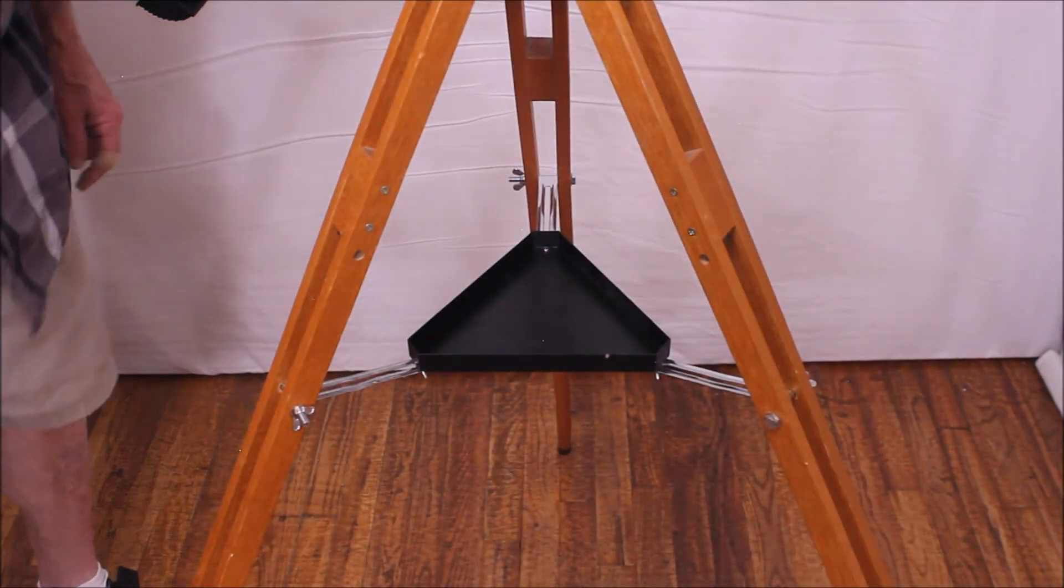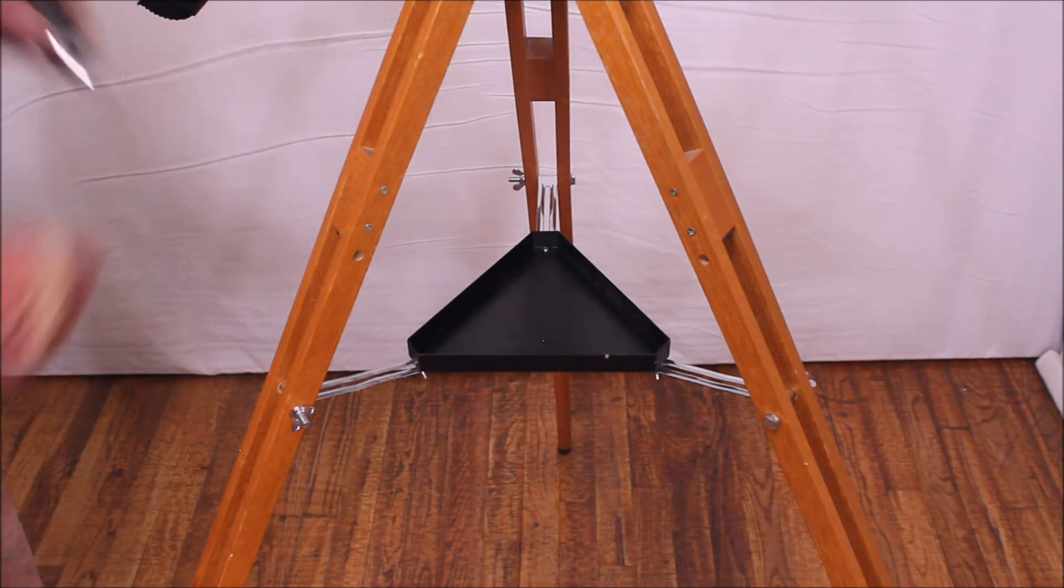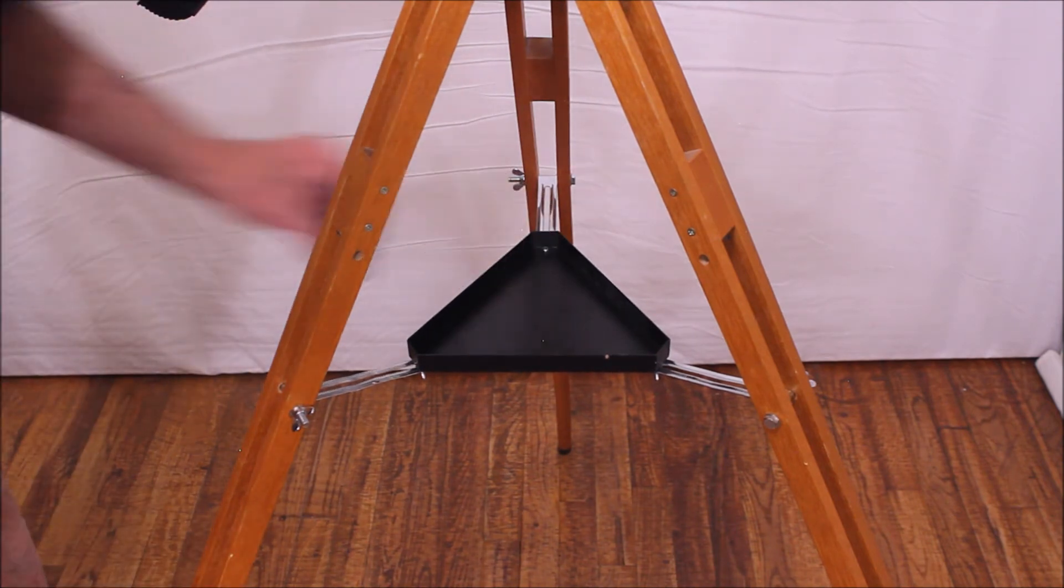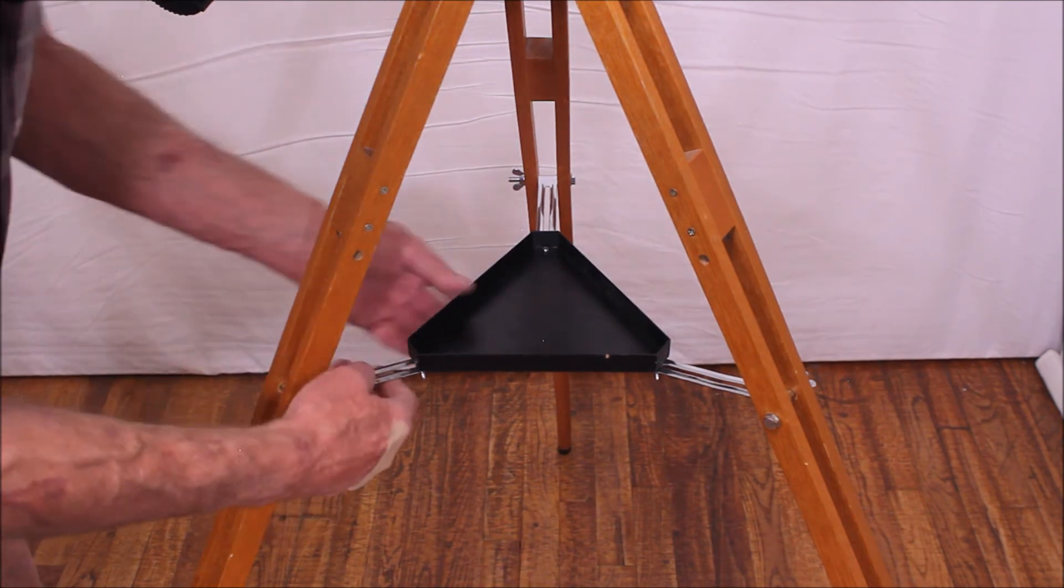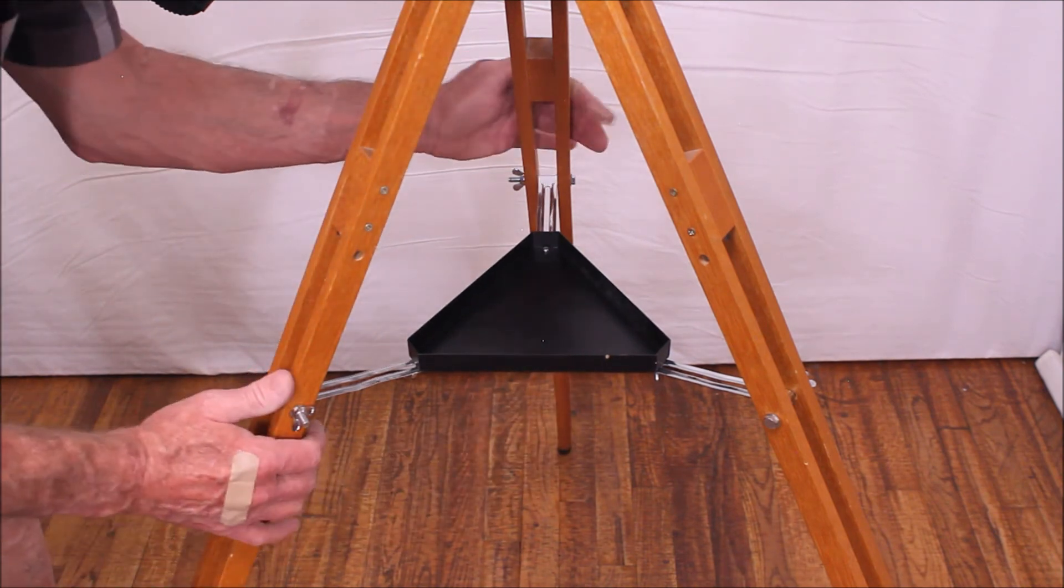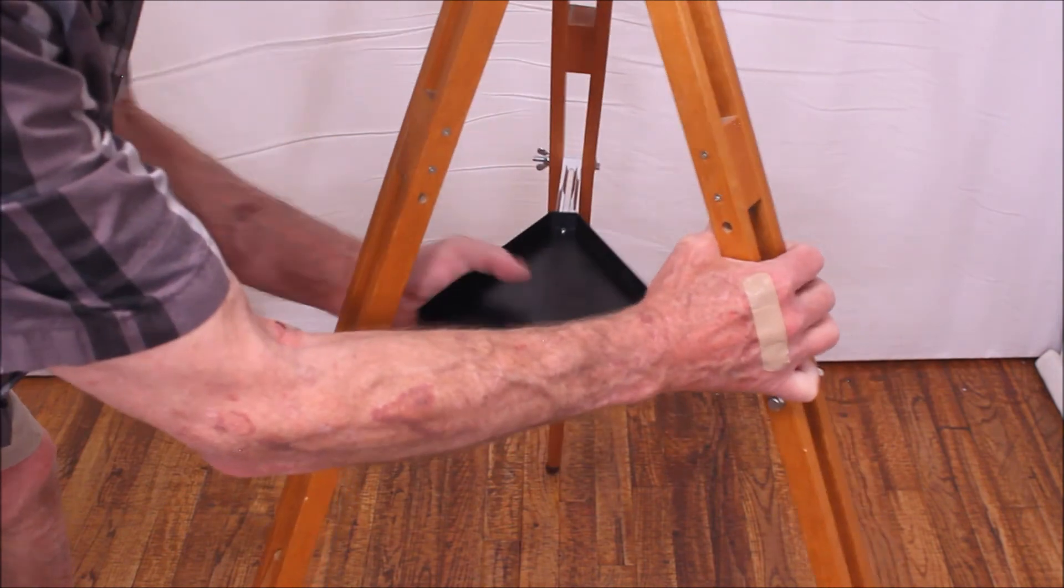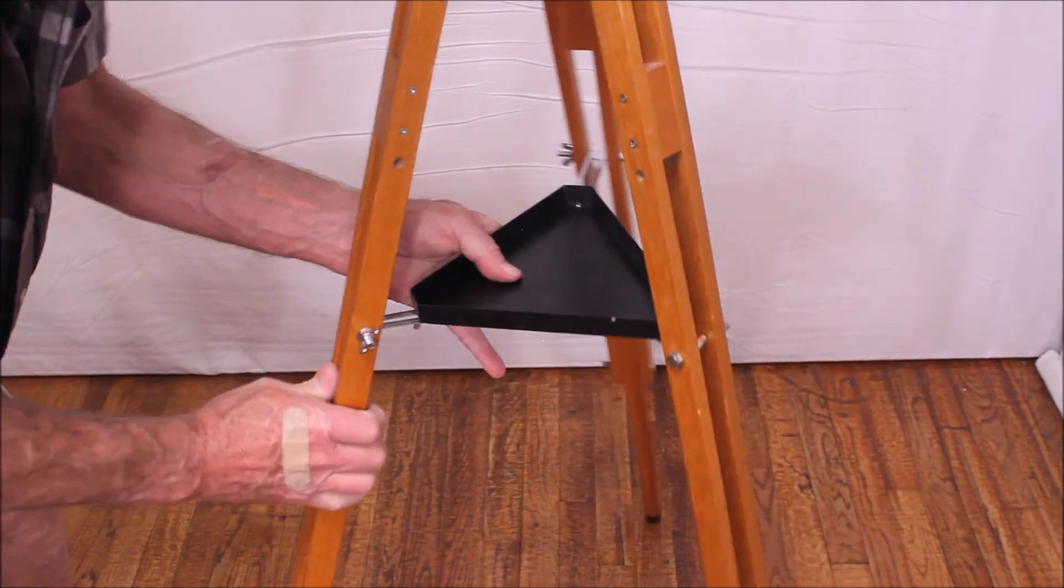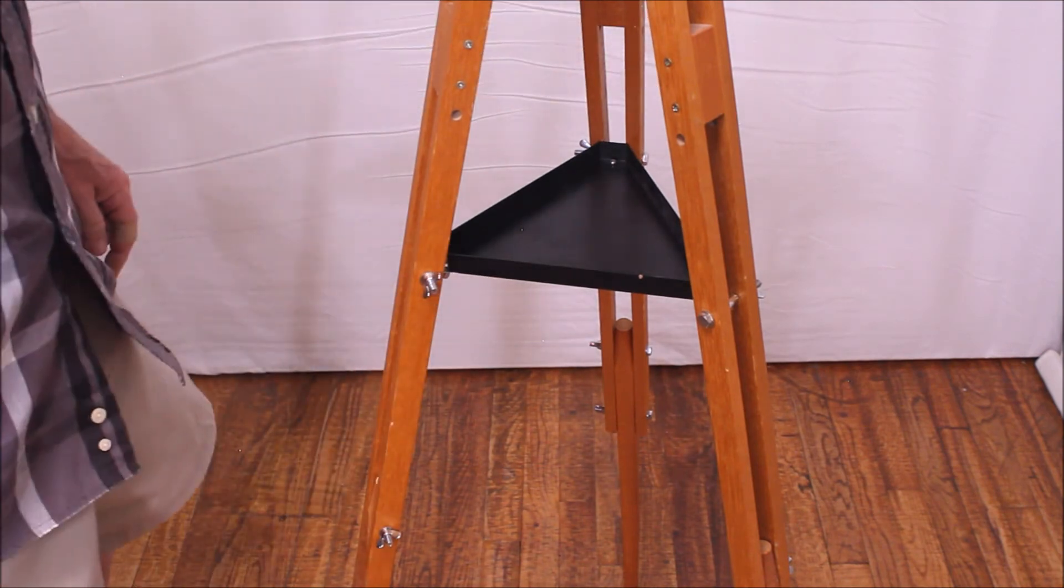The tripod tray on this scope is more flexible than many others. First of all, it's nice. It's a real tray, so you can put eyepieces there or whatever. But the nice thing about it is that you can adjust the tray up and down with regard to the telescope legs. But also, it's very easy to slide this together.